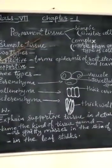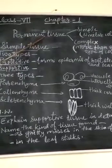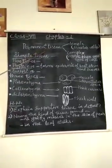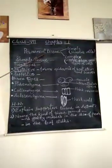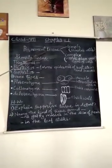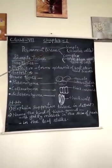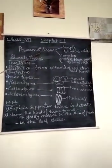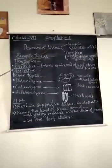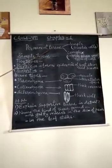Permanent tissue contains non-dividing cells. It means cells cannot divide further. Actually, the cells which are present in permanent tissue are derived from meristematic tissue.